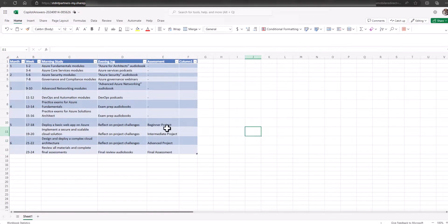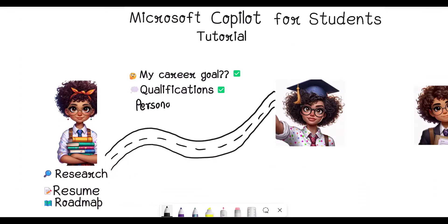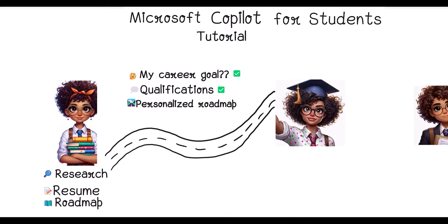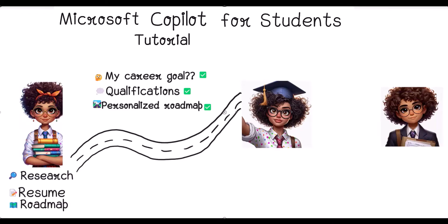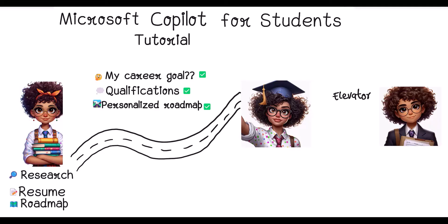So far in the tutorial, with the dream job in mind, you used Microsoft Copilot to research more about the career, generate a resume for qualified candidates, and create a personalized roadmap to upskill in readiness for your dream job. Part two of this tutorial assumes you have fulfilled the requirements in your roadmap and are now feeling confident to put yourself out there for opportunities. You'll focus on how you can clearly present yourself as a professional, communicating your skills, ambitions, and qualifications. In this section, Microsoft Copilot will help you generate a personal elevator pitch and conduct a mock interview.